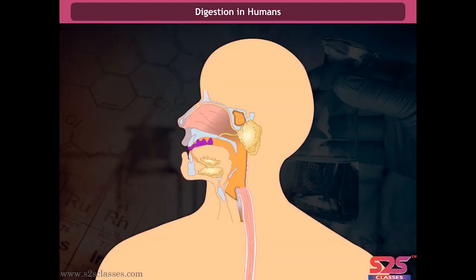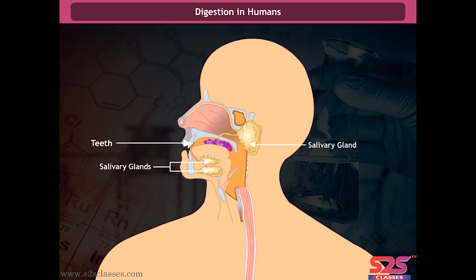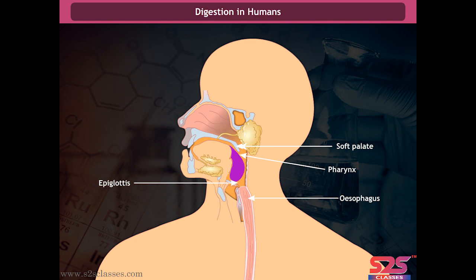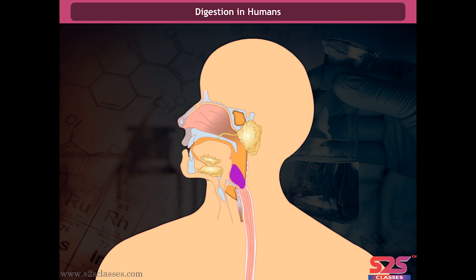Ingestion is the process of intake of food through the buccal cavity. Food first enters into the buccal cavity, which consists of teeth, the tongue, and the salivary glands. The teeth mechanically break down the food into smaller pieces, and are rooted in separate sockets in the gums. The salivary glands secrete saliva, and the enzymes present in saliva break down fat and digest the starch present in the food.